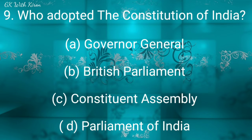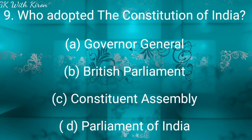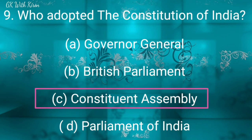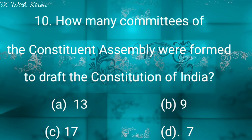Question nine: Who adopted the Constitution of India? Option A: Governor-General, option B: British Parliament, option C: Constituent Assembly, and option D: Parliament of India. The correct answer is the Constituent Assembly.